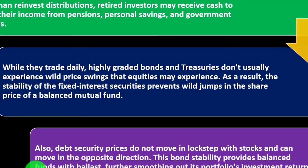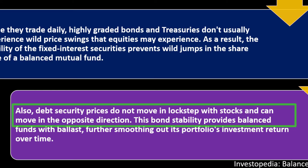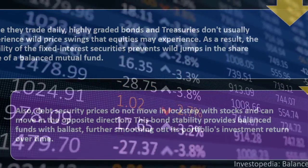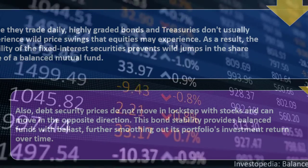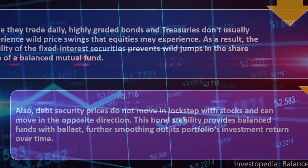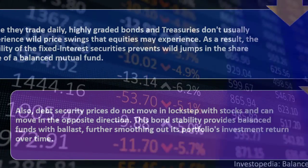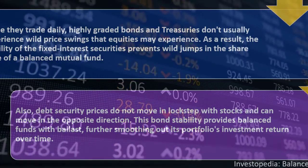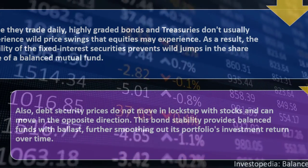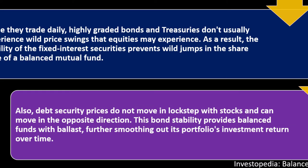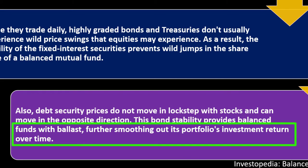The stability of fixed interest securities prevents wild jumps in the share price of a balanced mutual fund. Debt securities prices do not move in lockstep with stocks and can actually move in the opposite direction. Many things that negatively impact the stock market — even with diversification within equities — might not have the same impact on the debt side; often they move inversely, though not always. You would expect that when stocks go down, bonds might be doing better, though in some market events both can decline. Bonds tend to be hit less severely, acting as a safe haven or hedge.